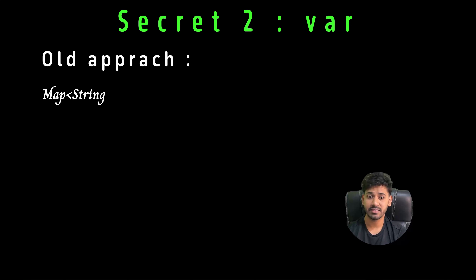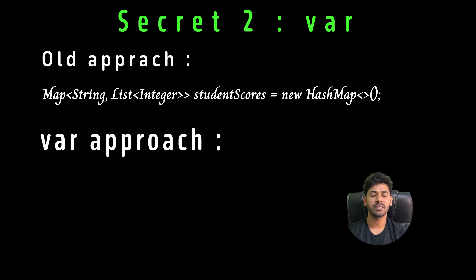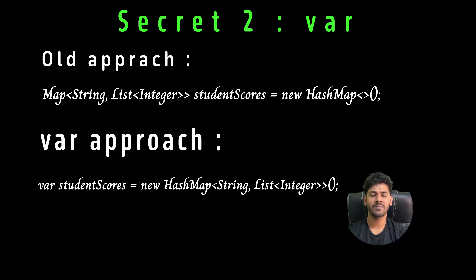Secret two: var — less noise, cleaner code. Have you ever felt your code looks too noisy with long type declarations? That's where Java var comes in. Available since Java 10, it helps reduce clutter. For example, instead of Map<String, List<Integer>> scoreMap = new HashMap<>(), you can just write var scoreMap = new HashMap<String, List<Integer>>().